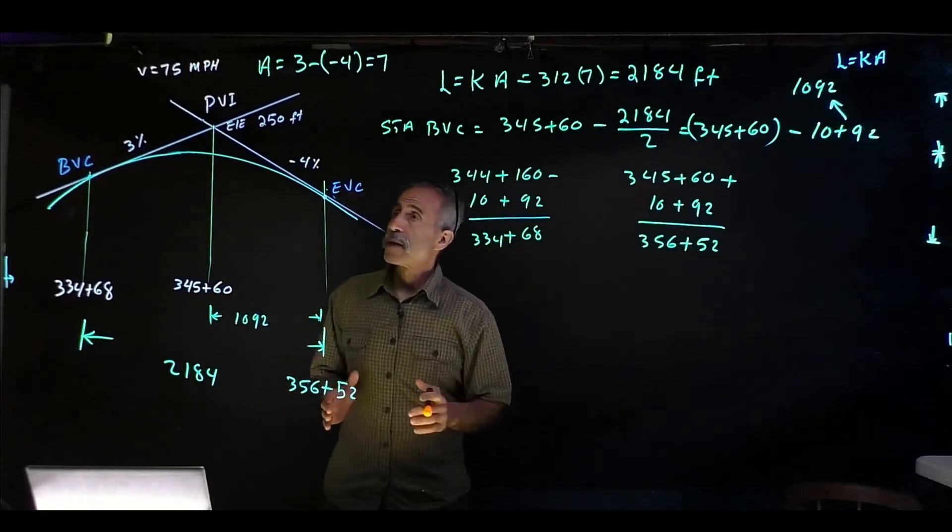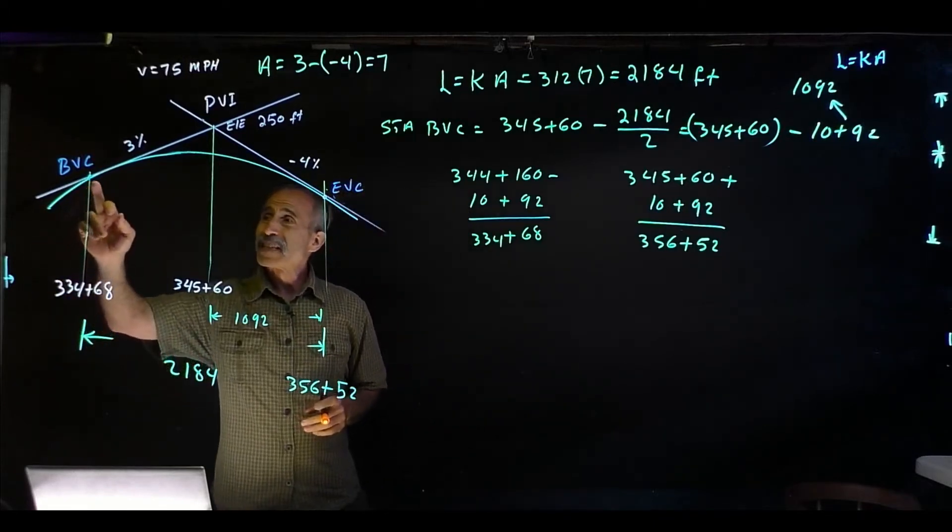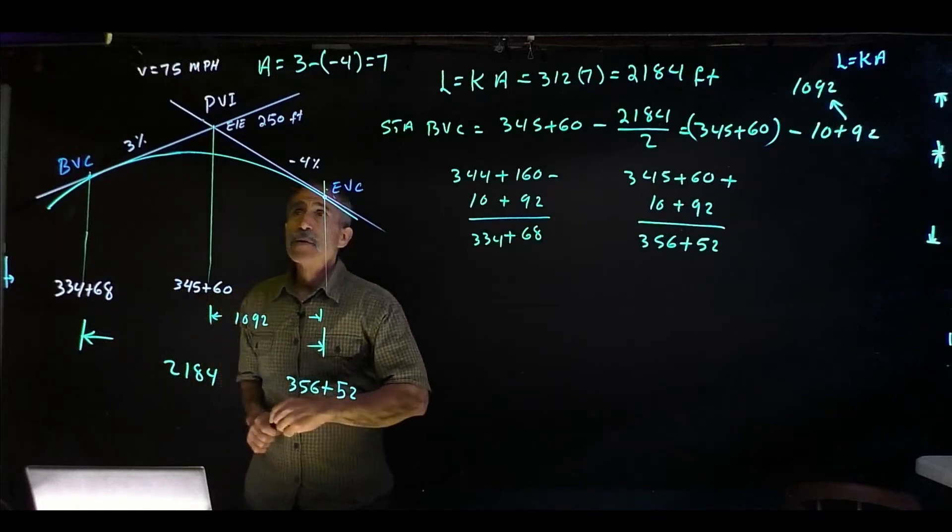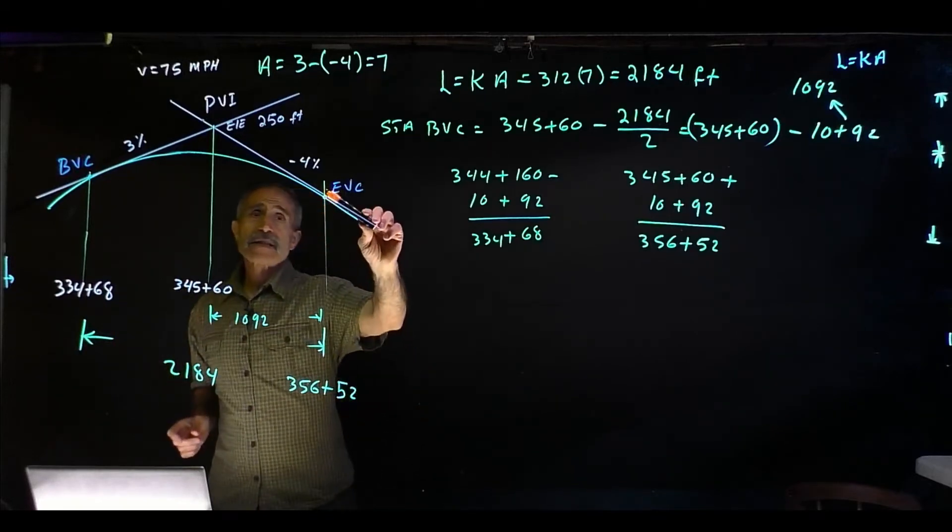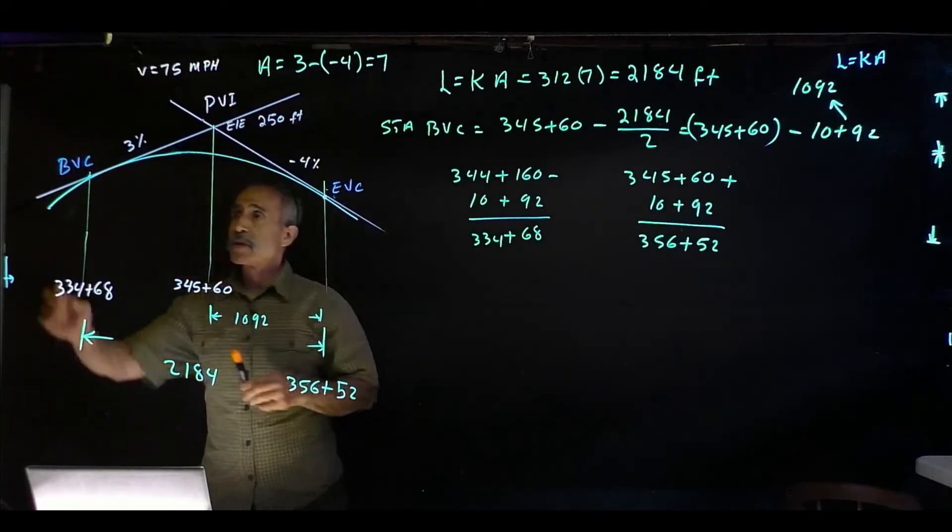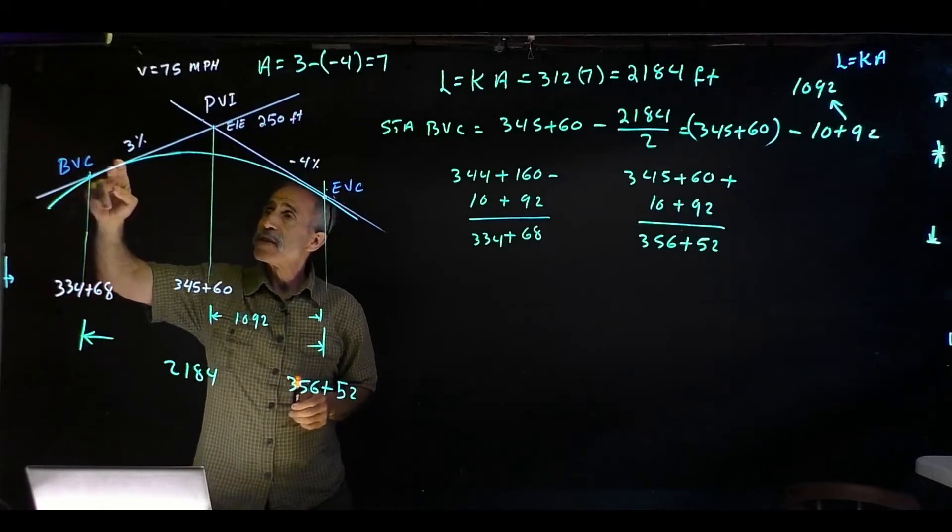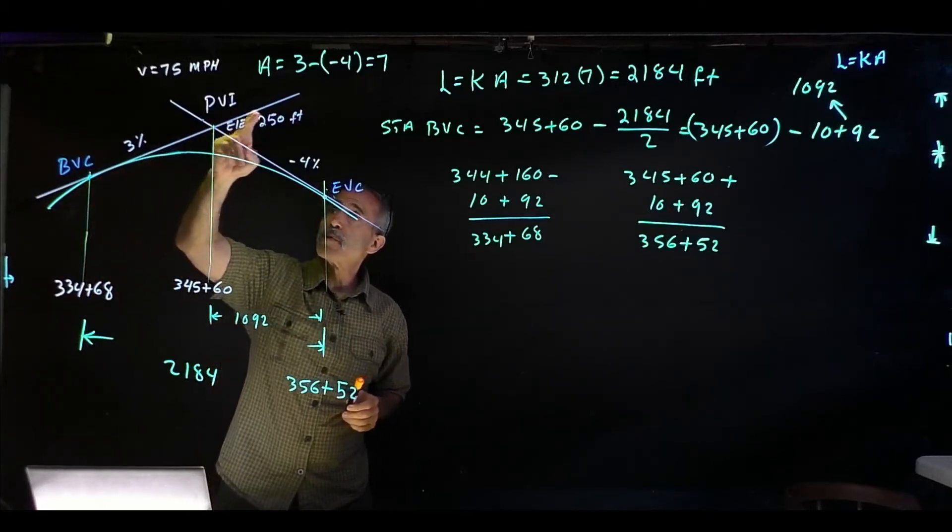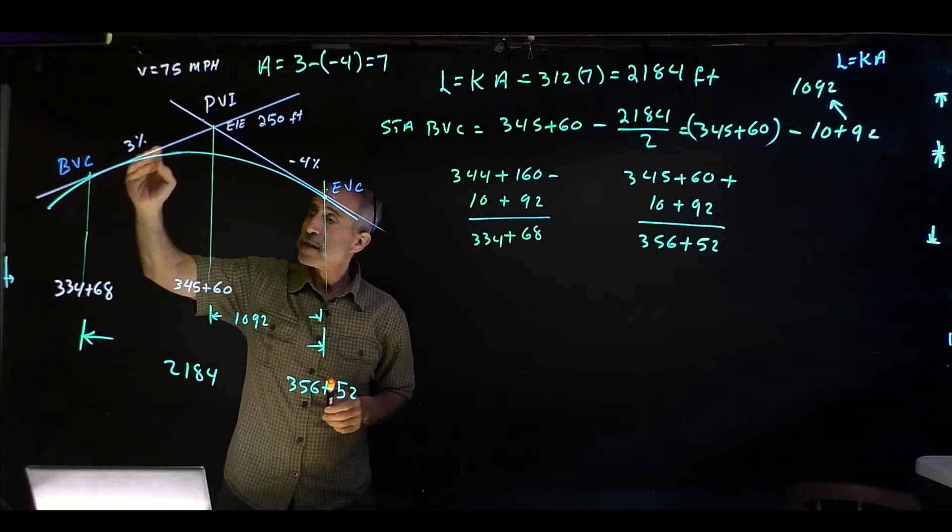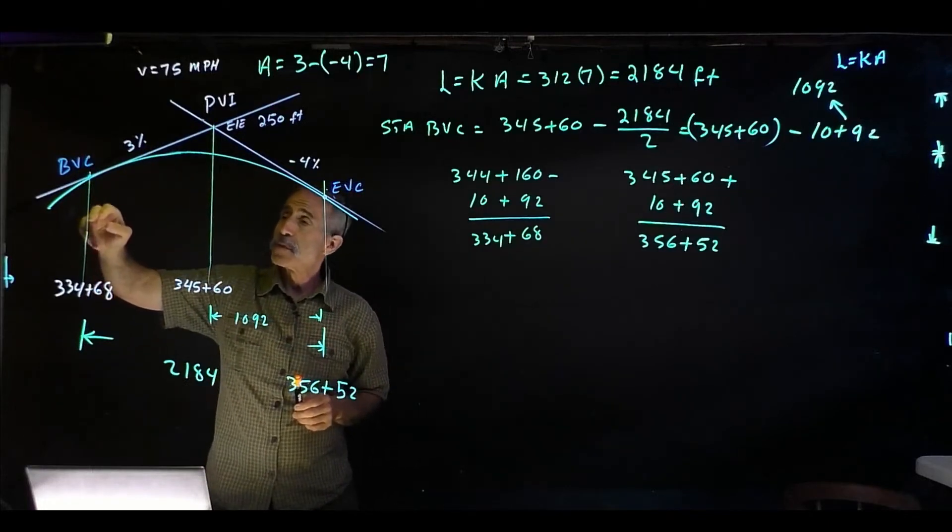So the next thing I want to find out, I want to know what is the tangent elevation at BVC. What I mean by tangent elevation, this is my tangent line going down. So the tangent elevation is elevation on this line, this straight line going up, which is 3% going up. What is the elevation at station 334+60?